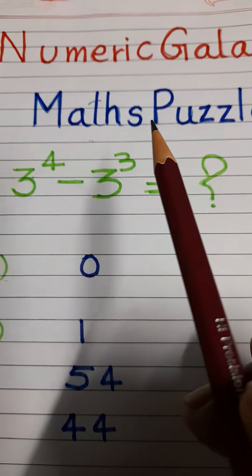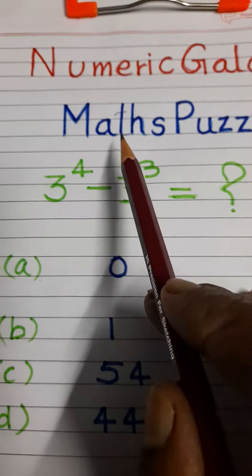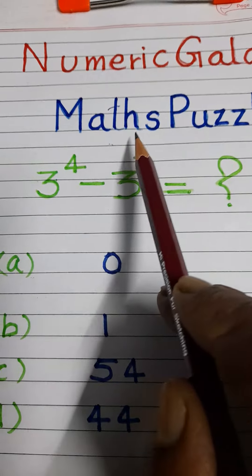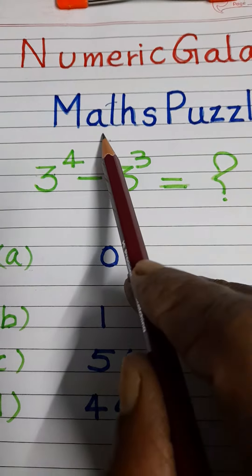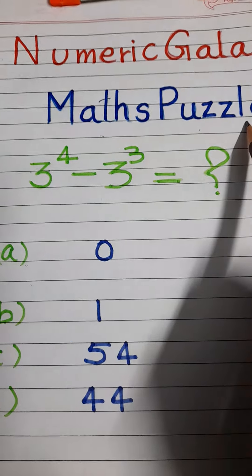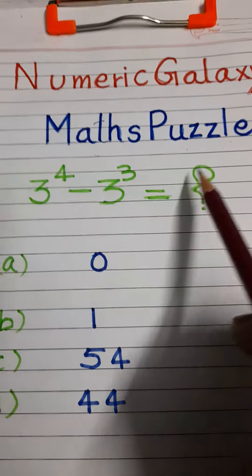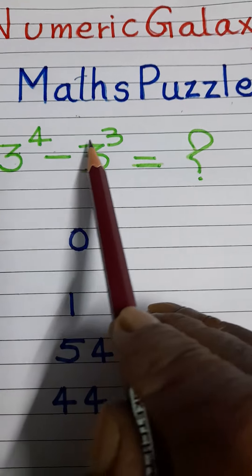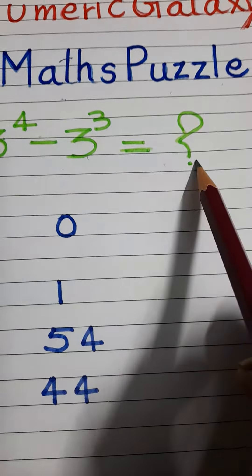Welcome guys to Numeric Galaxy YouTube channel. This video is a short video with a math puzzle to make your brain very sharp. The question is: 3 power 4 minus 3 power 3 will be equal to what?